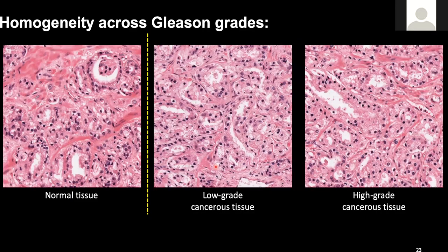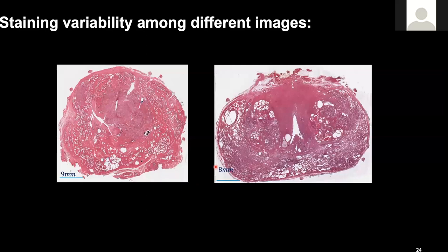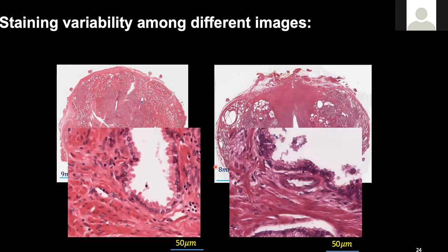Another challenge is the homogeneity of the tissue patterns. I've listed three examples of normal tissue and cancerous tissue. By a layman's perspective, it is very hard to tell the difference between the normal tissue and the cancerous tissue, and so it is also hard for the system to differentiate them. A third major challenge is staining variability. Although the tissue is being cut and processed at our one local center following exactly the same protocol, and we use a robotic stainer, the staining variability is obvious as you can see when zooming in.